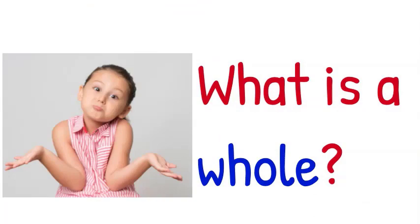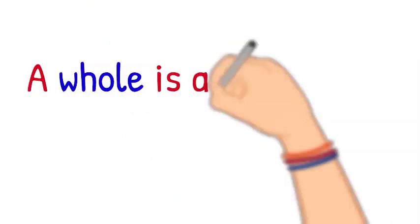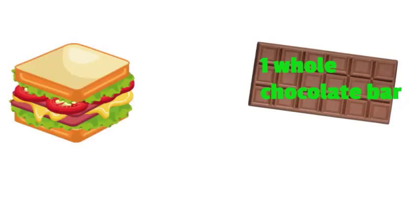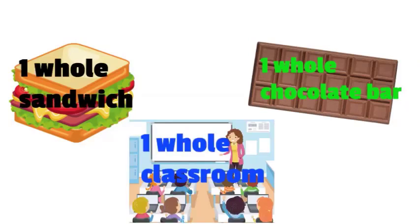What is a whole? A whole is all of the parts of a shape or a group. This is a whole chocolate bar — no pieces missing, no pieces eaten. This is a whole sandwich — no pieces missing, no pieces eaten. And this is a whole classroom with all students present.